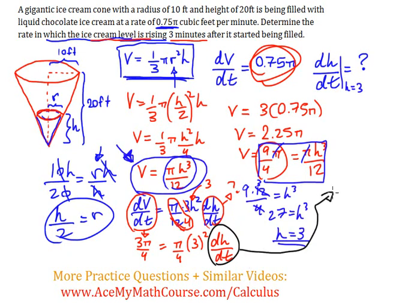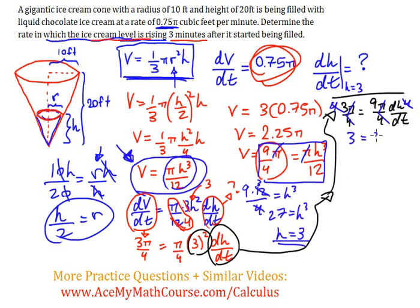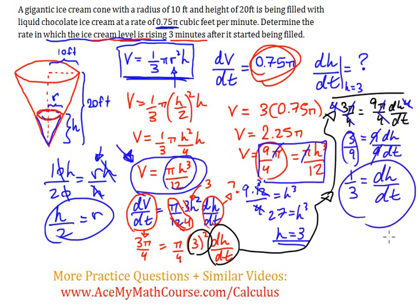So, we've got 3 pi over 4 equals, now, 3 squared is 9. So, I get 9 pi over 4 times dh dt. And this is going to work out rather nicely. I can just multiply both sides of the equation by 4. Multiply by 4. Multiply by 4. So, those 4s cancel out. Divide both sides by pi. So, they cancel out as well. 3 equals 9 dh dt. Look at that. Divide both sides by 9. 3 over 9 is a third. Look at that beauty. So, dh dt is a third.